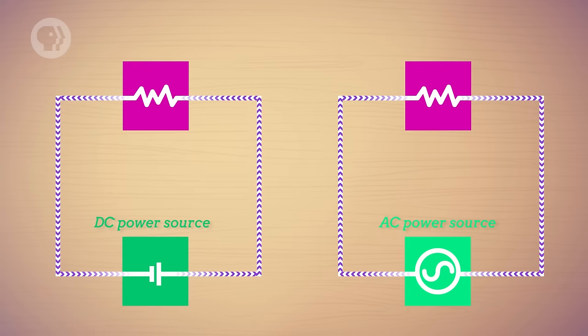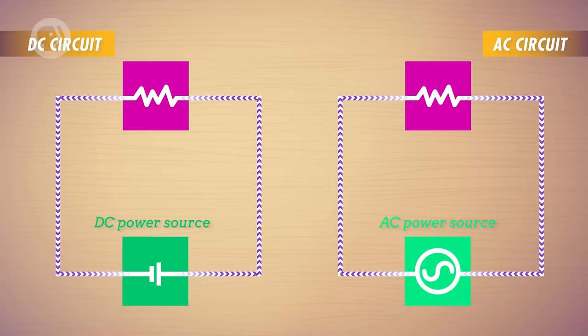When you talk about direct current circuits, describing voltage and current in a given situation is pretty straightforward. Typically, the voltage source in a DC circuit is unchanging, so the current will be constant too. But in an AC circuit, both the voltage and the current are constantly changing directions, from positive to negative and back again. So how do you describe values when they're constantly changing?